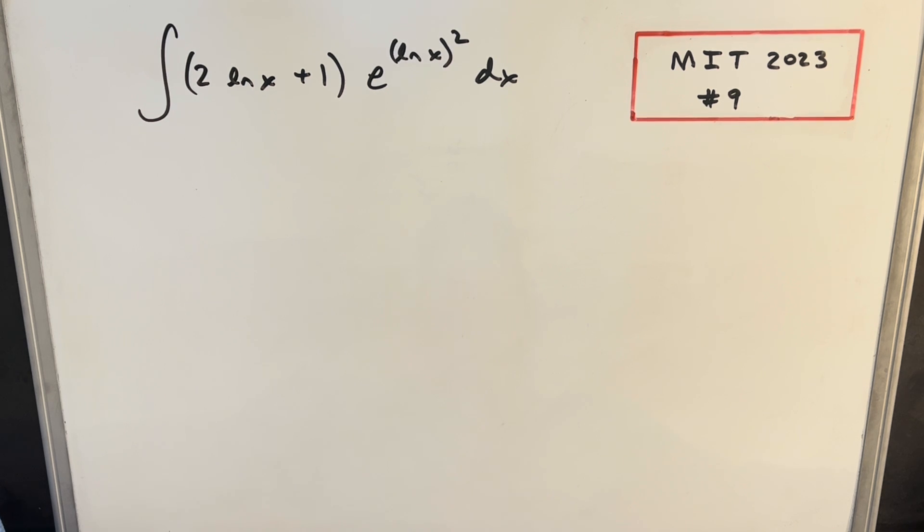We have the integral of 2 ln(x) plus 1, all multiplied times e to the ln(x) squared dx. That's kind of troubling, right, to have ln(x) all squared in the exponent. It's pretty unusual.